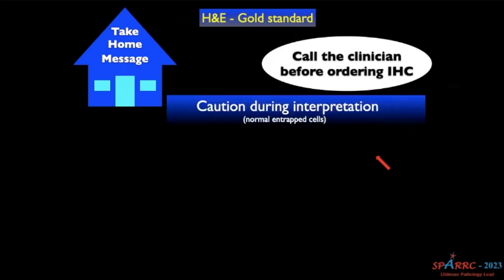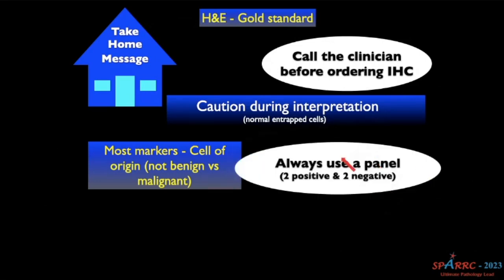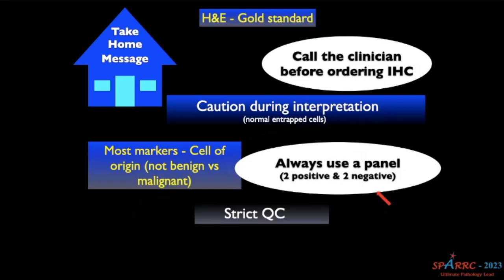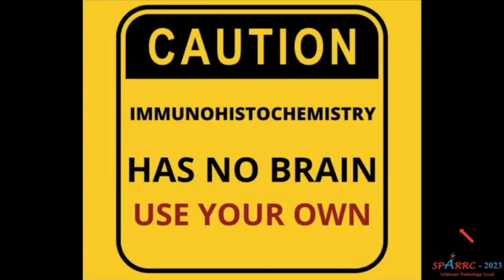Take-home messages: H&E is the gold standard. Call the clinician before ordering IHC. Caution is very important during interpretation — even normally entrapped cells can be positive for markers. Most markers indicate cell of origin, not benign versus malignant. Always use a panel — never depend on one marker. Select two positive and two negative markers. For example, for adenocarcinoma of the lung versus mesothelioma: use TTF1 and Napsin A for lung adenocarcinoma, and WT1 and BAP1 for mesothelioma. Strict QC is essential.